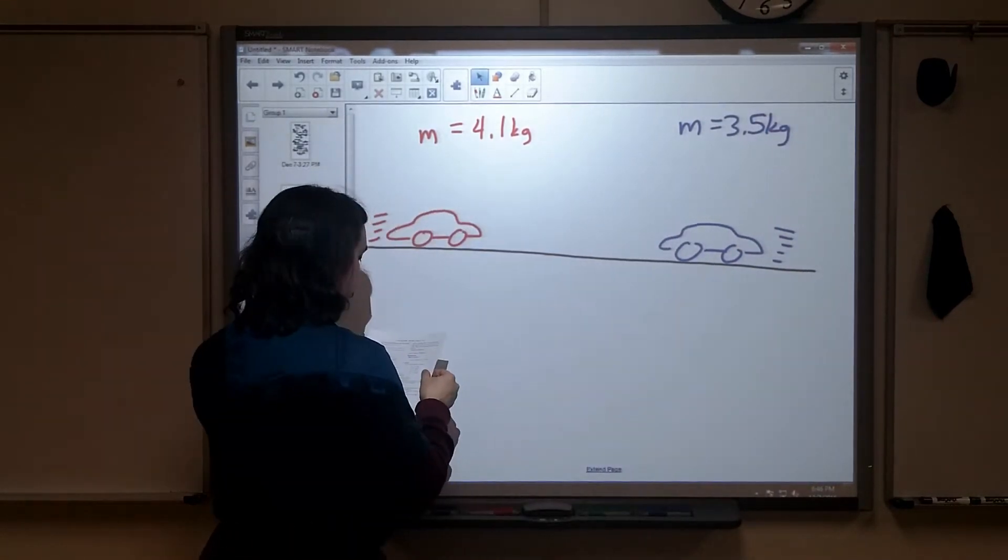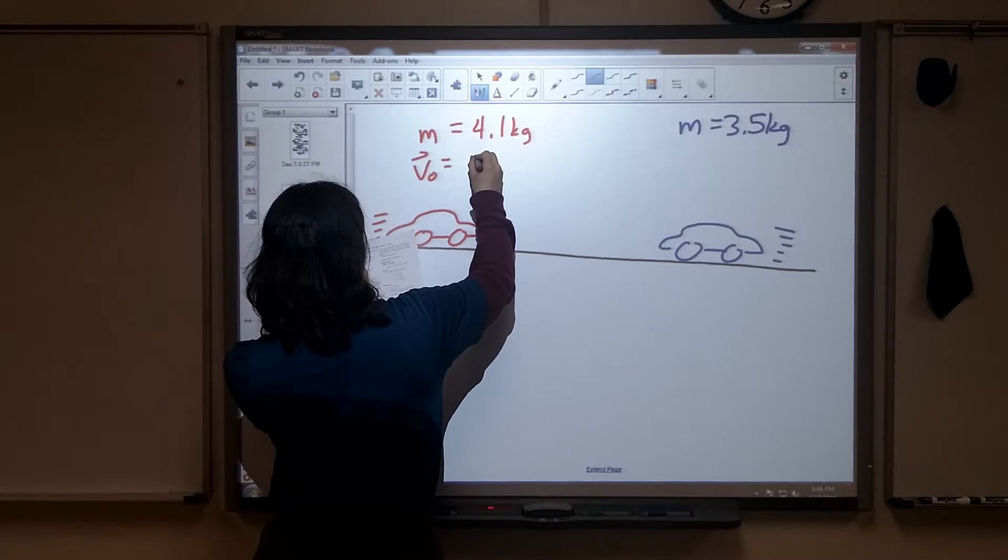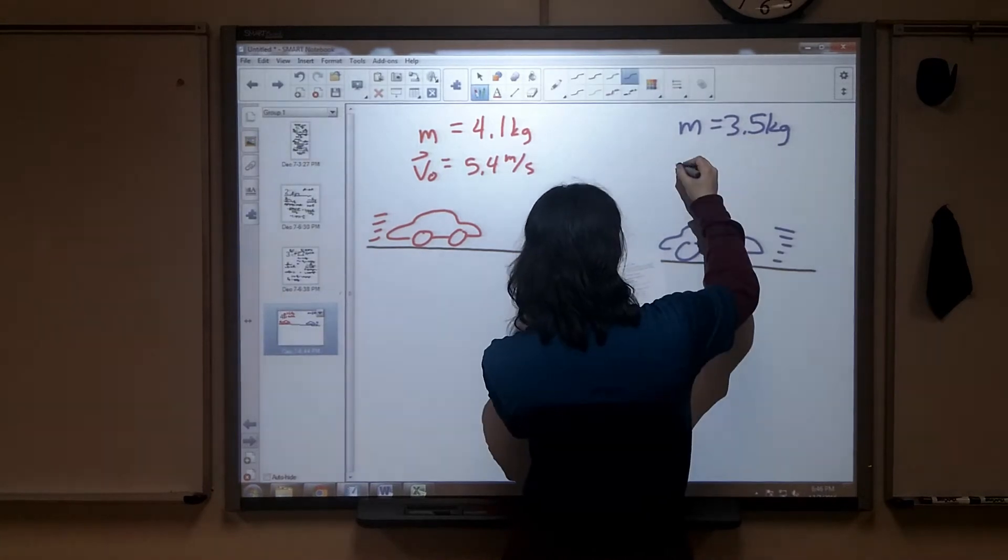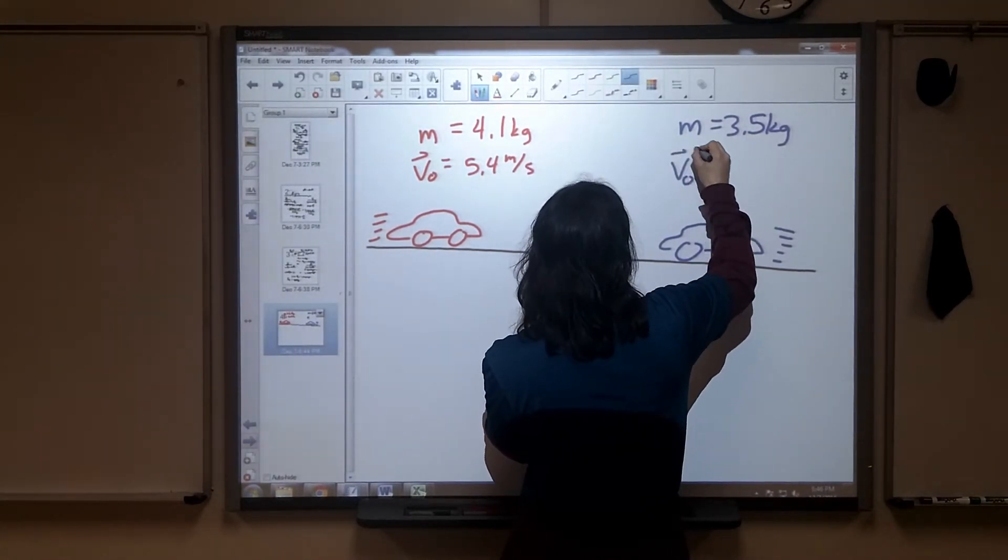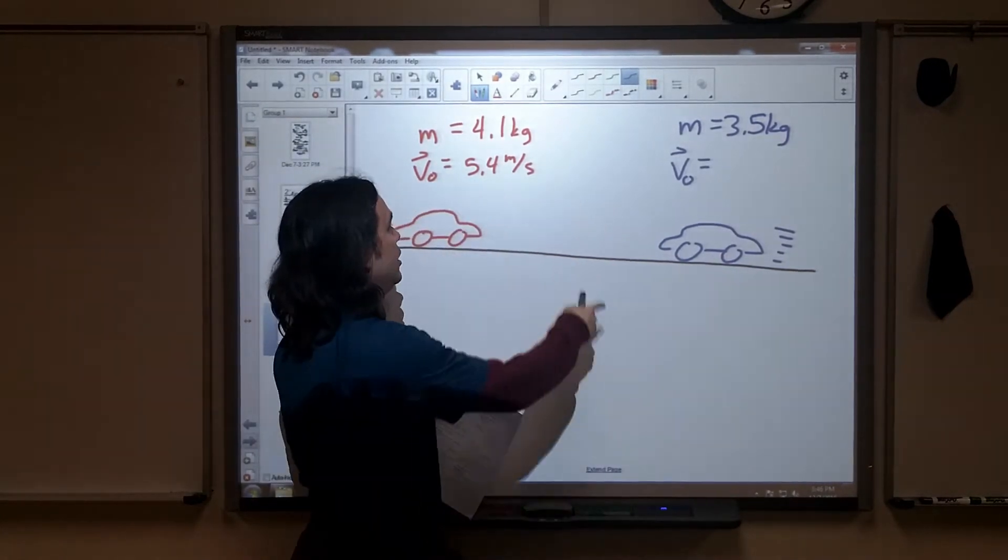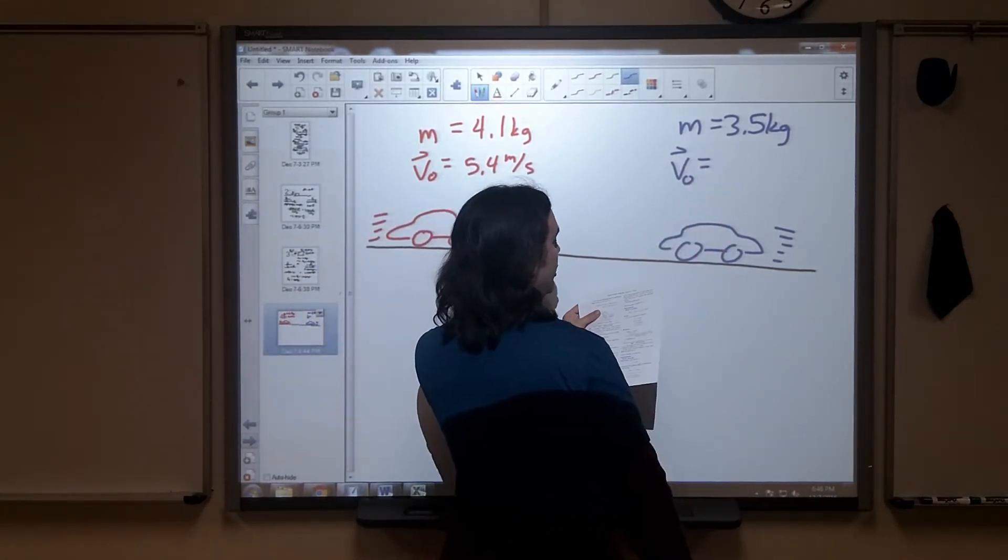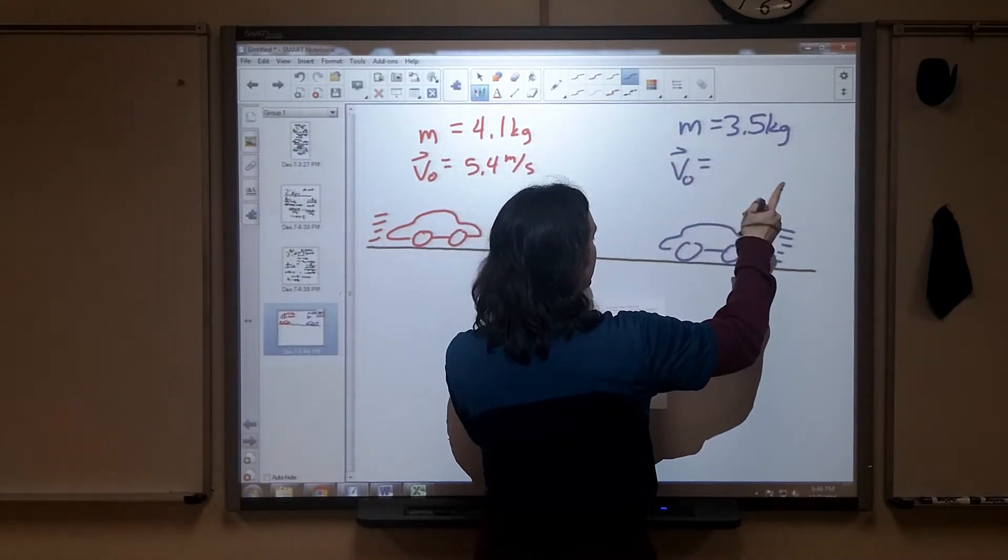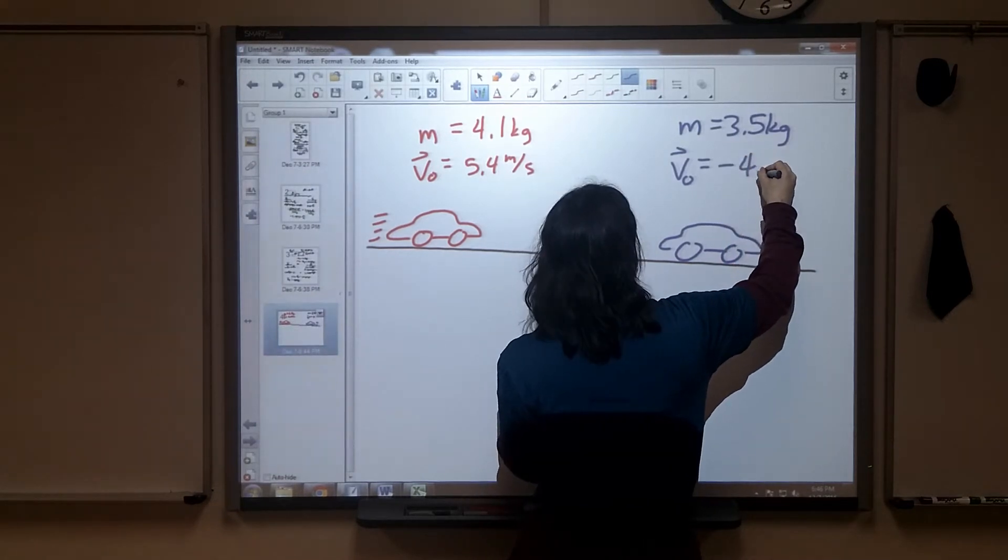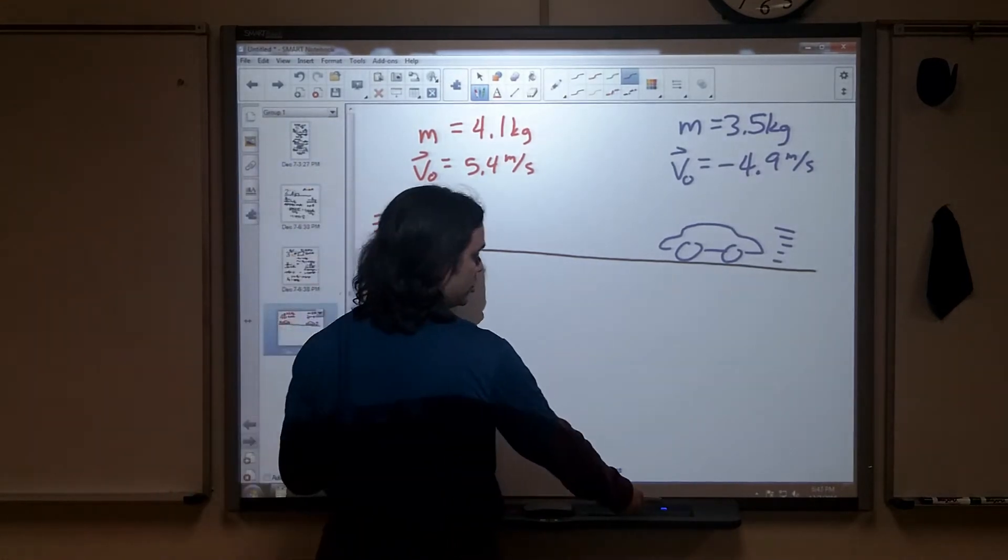Then they say they're moving towards each other with speeds 5.4 meters per second. So my initial velocity is 5.4 meters per second for the red car and 4.9 meters per second for the blue car. They say respectively. Whenever you see the word respectively, that means the order that the first set was given to you, that's the same order for the second set. Now here's the tricky part because they say 5.4 and 4.9, but the blue car is moving to the left. 4.9 meters per second, negative when we take into account direction, which is important.